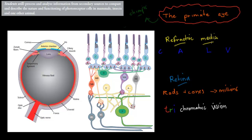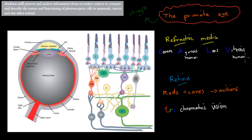It would have the same refractive media that we have. Remember, the refractive media were the parts of the eye that bend light — the cornea, the aqueous humor, the lens, and the vitreous humor. Those four are the ones responsible for the bending of light. Then they have a retina, like we have. These four were the main refractive media, and the retina is that membrane at the back of the eye.